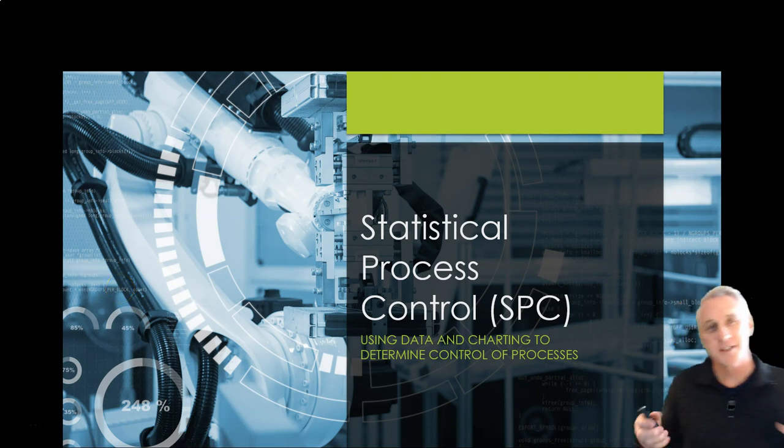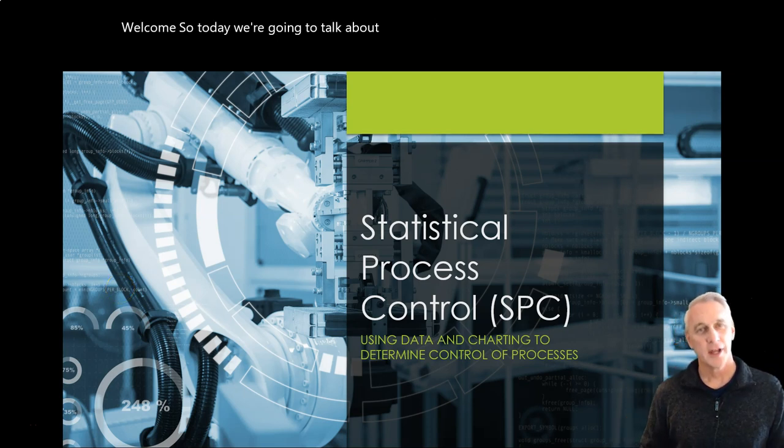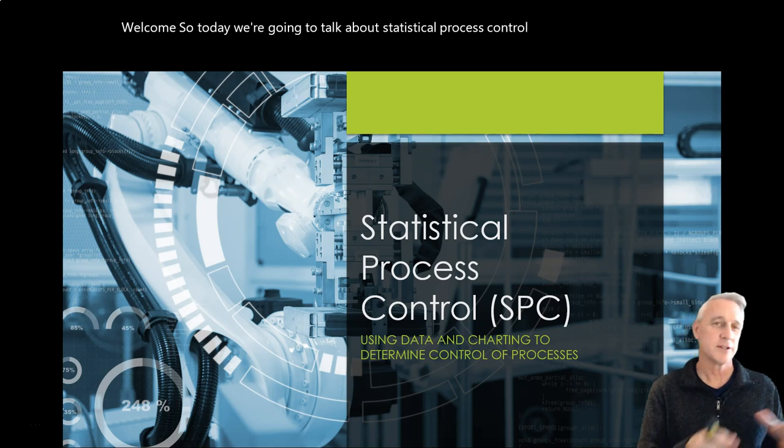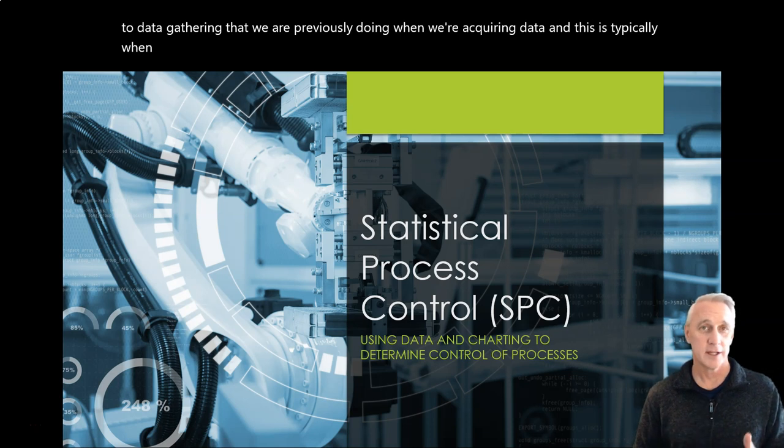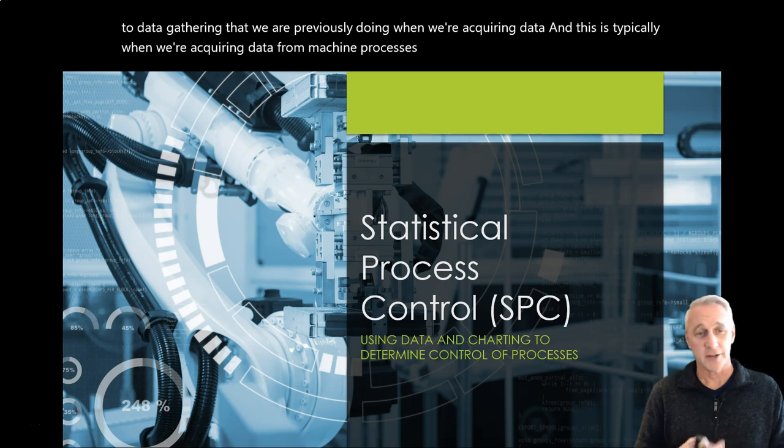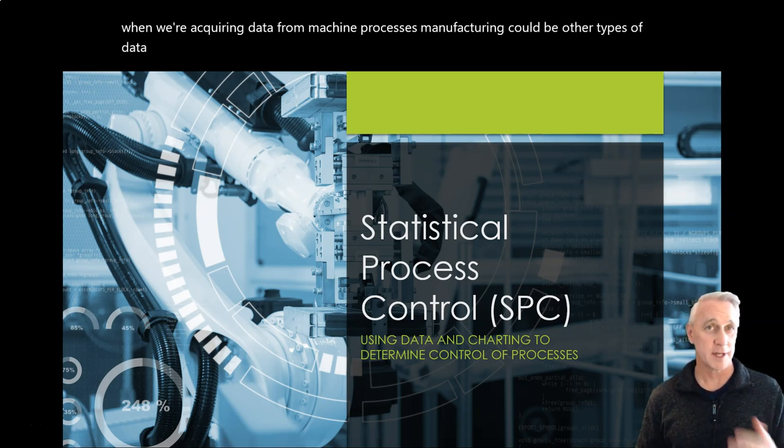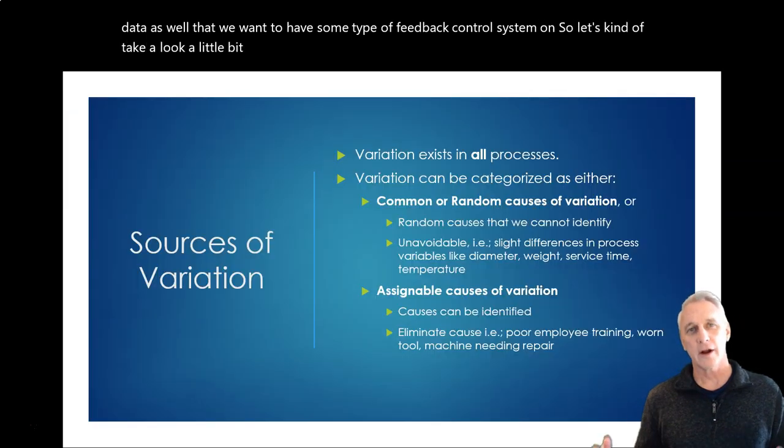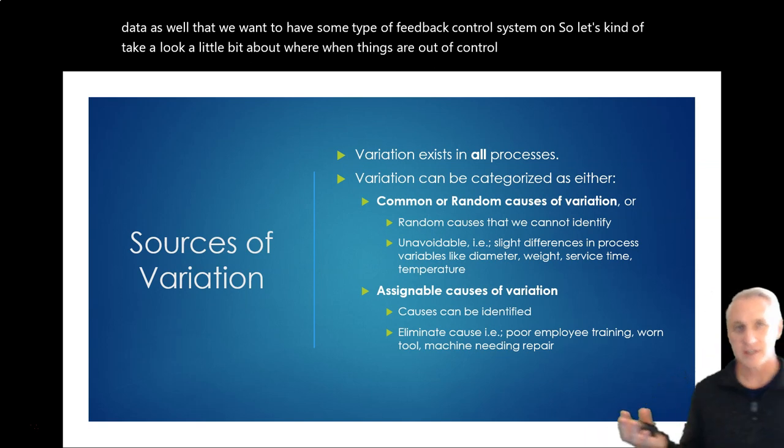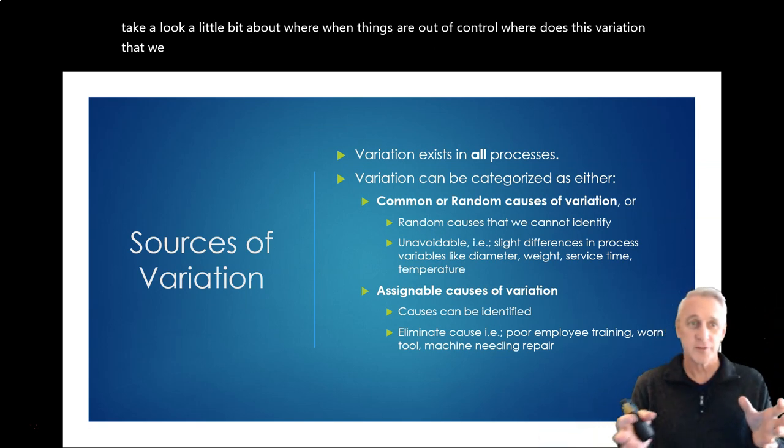Welcome. So today we're going to talk about statistical process control and how that relates to data gathering that we are previously doing when we're acquiring data. And this is typically when we're acquiring data from machine processes, manufacturing, could be other types of data as well that we want to have some type of feedback control system on. So let's take a look at where, when things are out of control, where does this variation that we can measure come from.